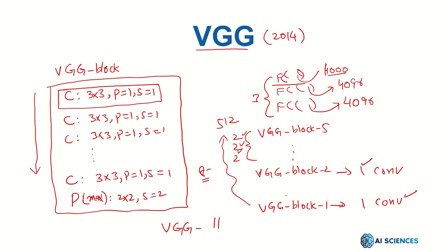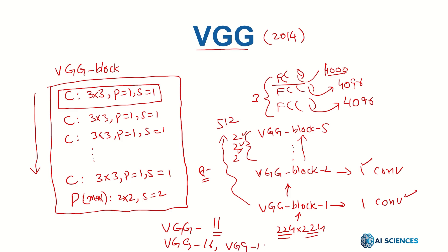Spatial dimensions are halved at every block. If the input to the first block is 224 by 224, the second block receives 112 by 112, and this halving is consistently followed by subsequent blocks. Beyond VGG11, other successful models include VGG16 and VGG19.